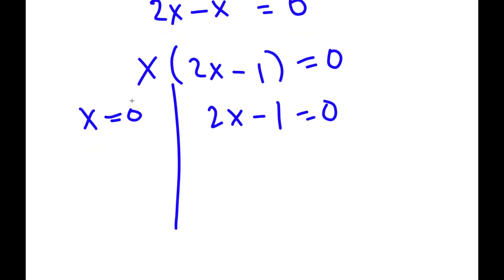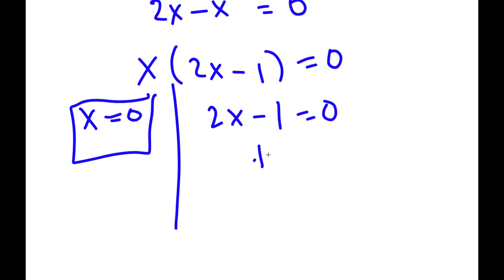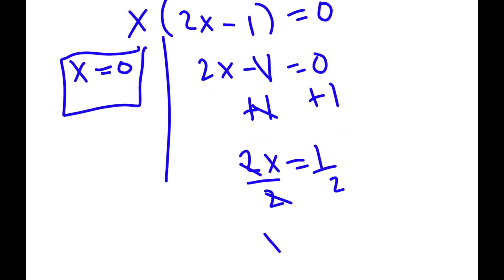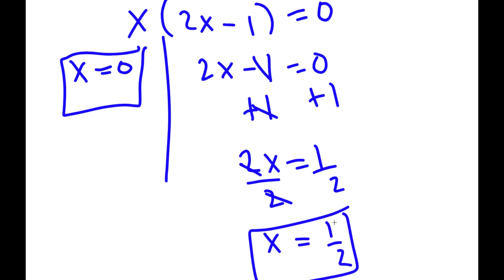For x equals zero, this is already a solution. For 2x minus 1 equals zero, I add 1 on both sides to get 2x equals 1, then divide by 2 to get x equals one half.